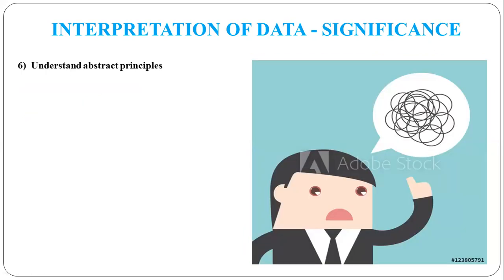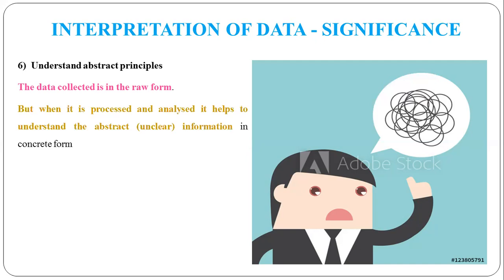The sixth significance is understanding abstract principles. 'Abstract' means unclear. Through data interpretation, researchers can understand unclear information. When researchers collect data, it is in raw form, and raw data is quite abstract — the researcher doesn't know what the data is saying. But as the researcher processes and analyzes the data, it moves into concrete form — for example, organized into a table. Once in concrete form, the researcher can easily understand the data. So interpretation converts raw, abstract data into concrete, understandable information.